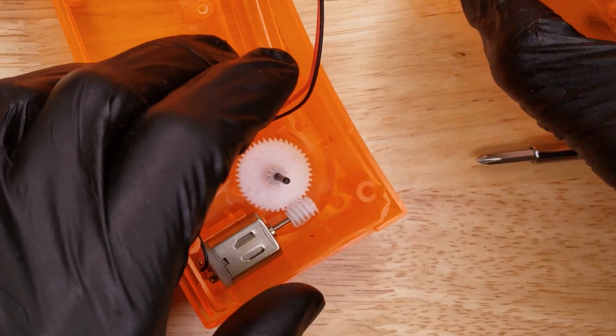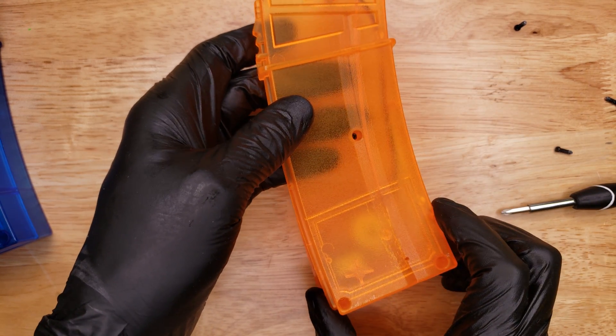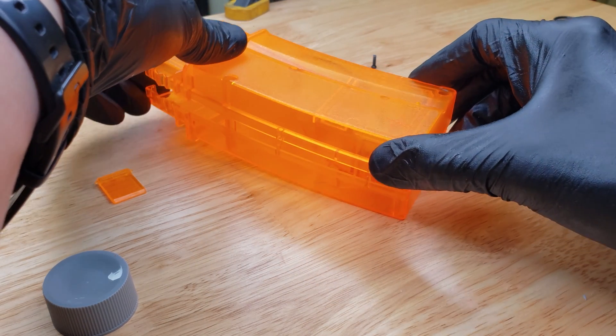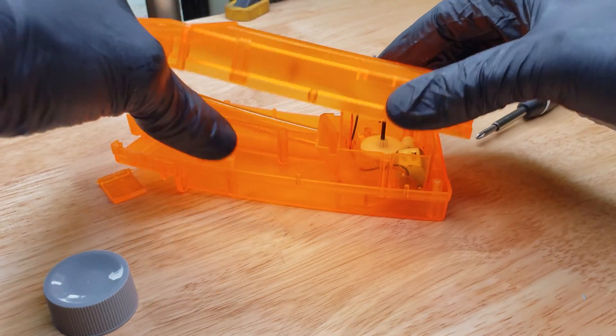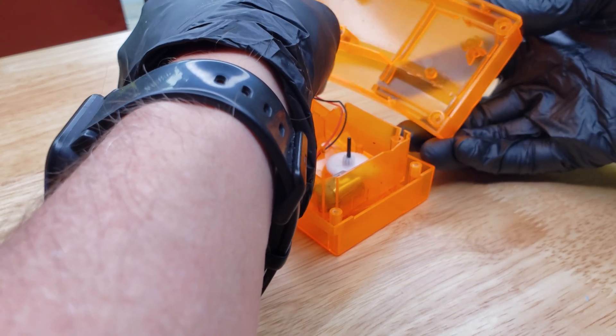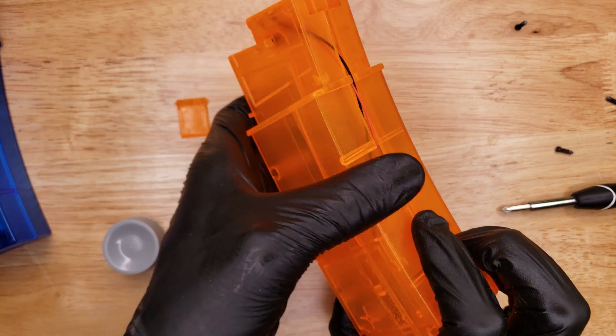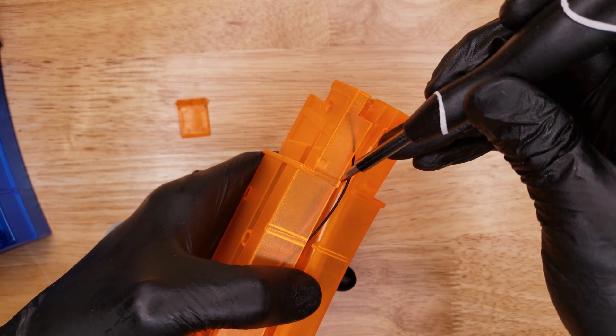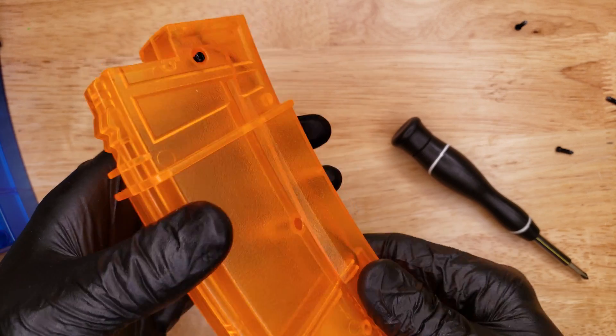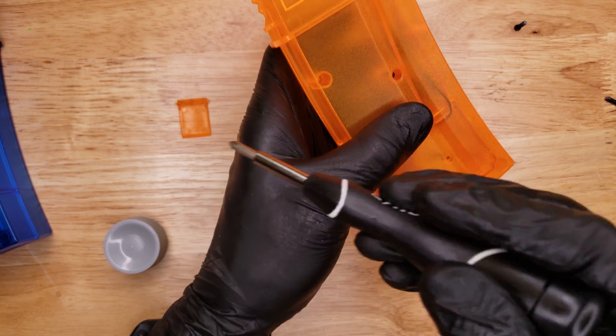And then carefully put this half back on. This is pretty tricky because the cables keep wanting to get pinched when you're putting it back together. There we go. I'm going to start putting some screws on the bottom just to hold it together. But I haven't put that flap back in yet.